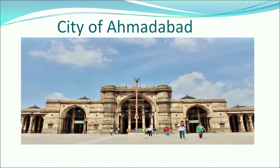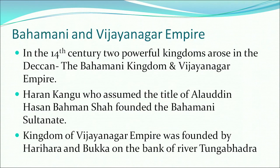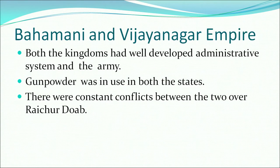Here we have a glimpse of the city of Ahmedabad built during this period. The most famous regional states were the Bahamani and the Vijayanagara Empires. In the 14th century, two powerful kingdoms arose in the Deccan. The Bahamani Kingdom was founded by Hasan Gangu, an official of the Sultanate, who took the title of Alauddin Hasan Bahman Shah — thus giving the name Bahamani Sultanate. The Vijayanagara Empire was founded by Harihara and Bukka on the banks of the River Tungabhadra. Both empires had well-developed administrative systems and armies, and both were well aware of the use of gunpowder. There were constant conflicts between the two over the Raichur Doab.